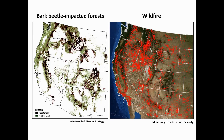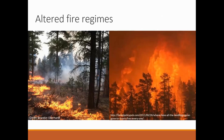The map on the left shows bark beetle-caused mortality over about the same time frame as the wildfire map — the 1980s to 2000s. What I'm trying to show is how large both of these disturbances are across our Western landscapes, and also how they impact many of the same areas. Historically, ponderosa pine forests would have burned very frequently with low intensity, where small trees might have been killed but the overstory trees largely survived.